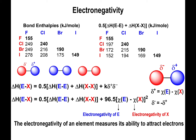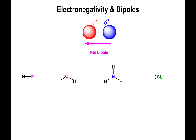We're going to use the electronegativity concept to describe the forces that keep molecules attracted to each other. First, we need to define the dipole moment. The dipole moment can be thought of as an arrow pointing in the direction of higher electronegativity — specifically, it starts at the delta plus end of the bond and goes towards the delta minus end, directed towards the more electronegative element.